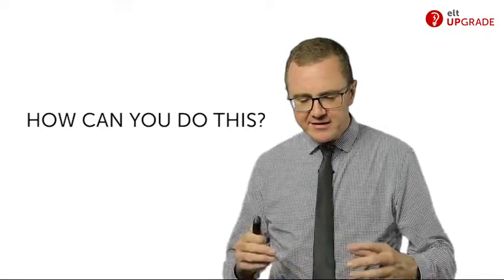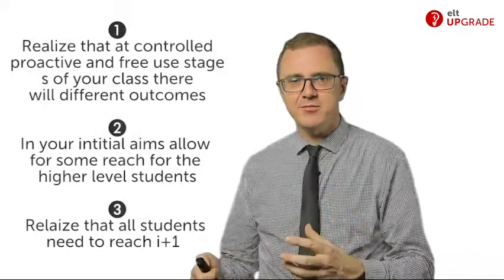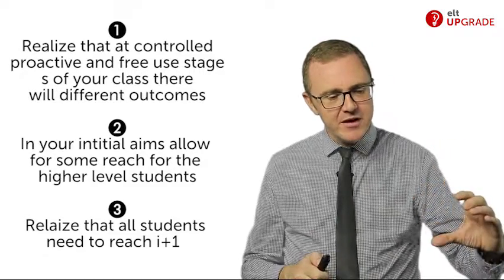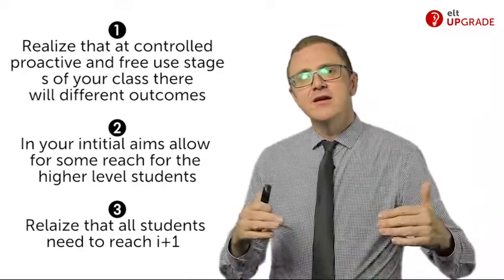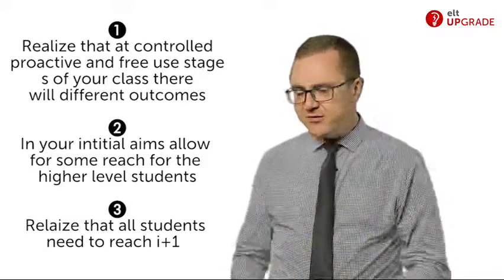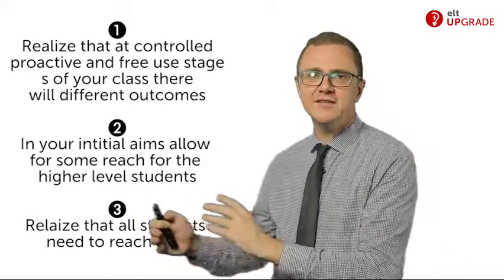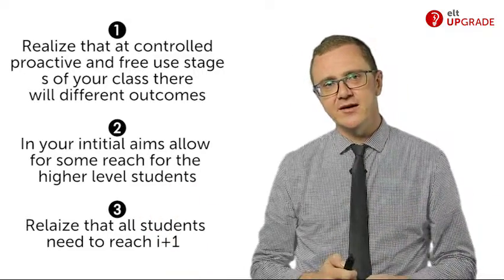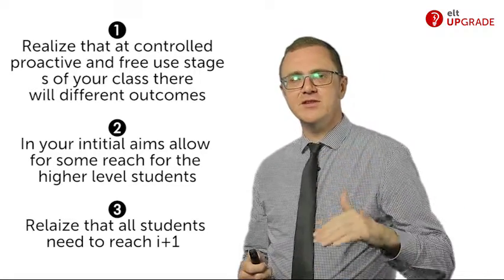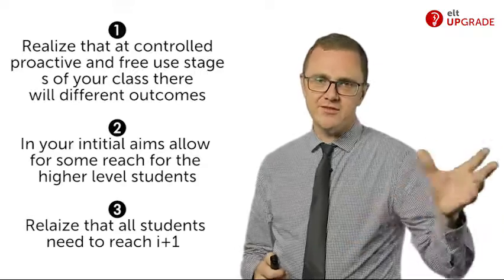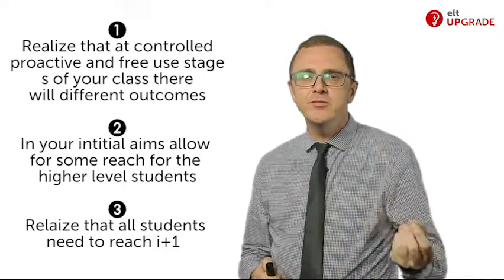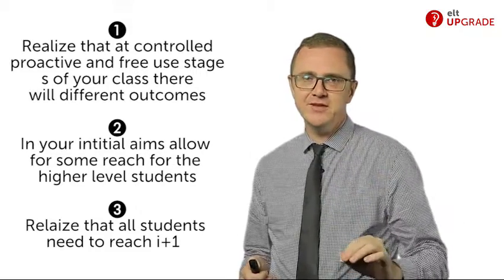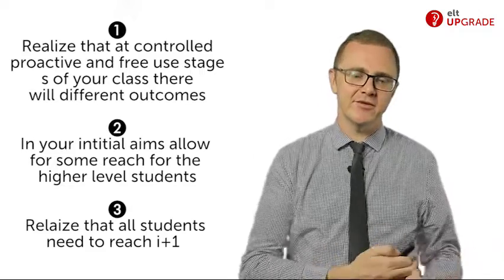In controlled practice and free practice, it doesn't have to be one size fits all. For example, in a controlled dialogue, the higher-level group might do 15 different versions, while two other students just do two versions. The point is that everyone needs to reach i plus one. Look up Stephen Krashen's theories on i plus one — input plus one. They need to be moving up. If they come to class and just practise something they already know, they're wasting their time.